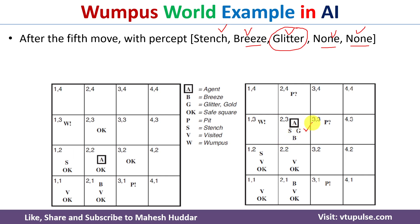The agent will execute an action called grab to take the gold. Then it will follow the path it used to reach this square from the initial state, but in reverse direction, and come back to (1,1). When present in (1,1), it will execute an action called climb to come out of the cave.